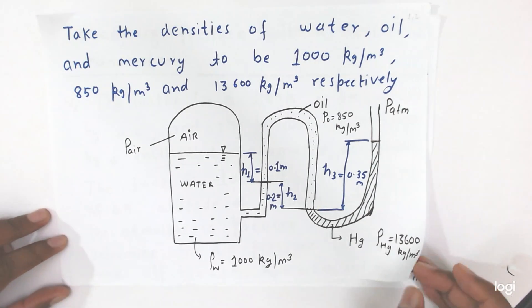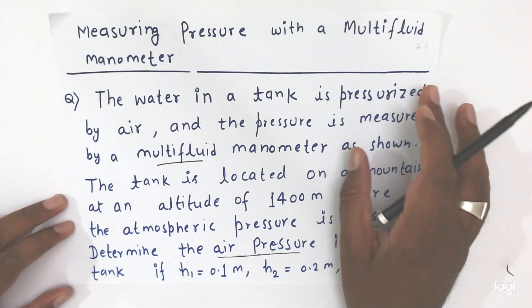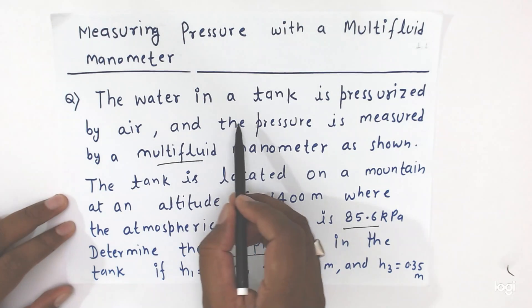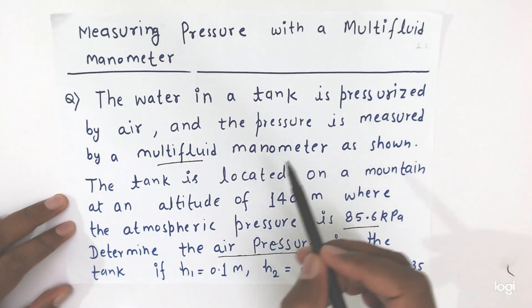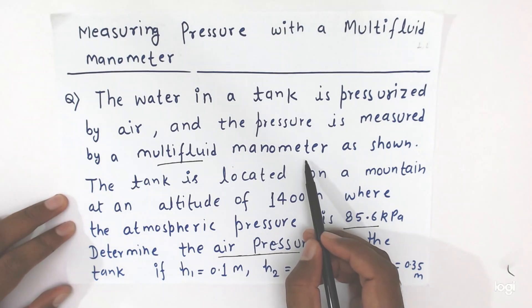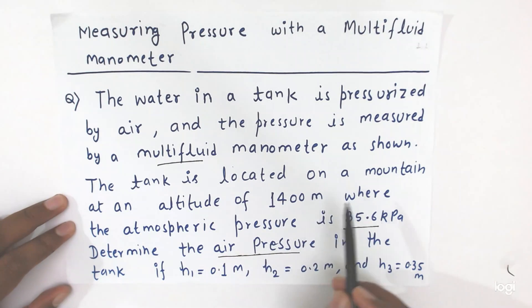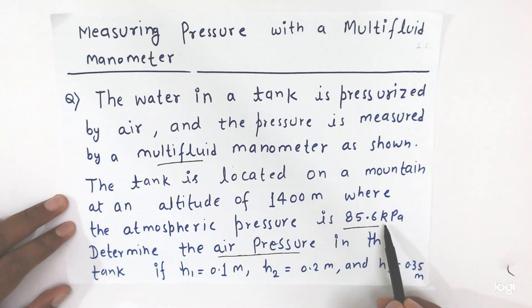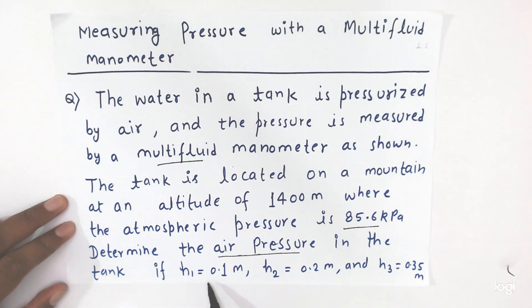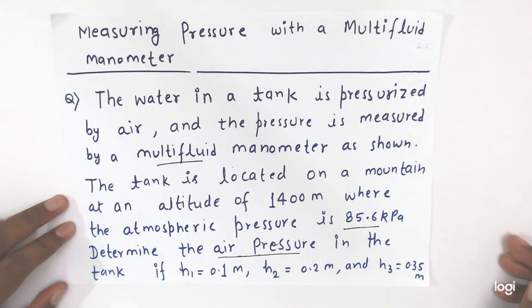So first I will read the question. The water in the tank is pressurized by air and the pressure is measured by a multi-fluid manometer as shown. The tank is located on a mountain at an altitude of 1400 meters where the atmospheric pressure is 85.6 kilo Pascal. Determine the air pressure in the tank if h1 = 0.1 meter, h2 = 0.2 meter, and h3 = 0.35 meter.